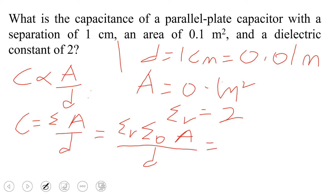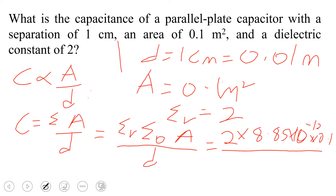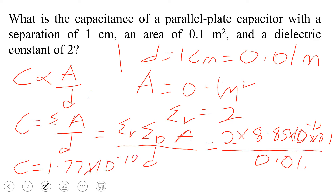From the information: epsilon_r (dielectric constant) is 2, epsilon_0 is 8.85 × 10⁻¹² farads per meter, area A is 0.1 meter squared, and d is 0.01 meter. When we simplify this, we get capacitance equal to 1.77 × 10⁻¹⁰ farads.